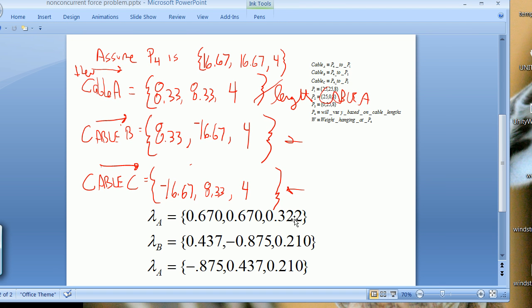And here you see the calculation. If you take 8.33 squared plus 8.33 squared plus 4 squared square root, take that length, divide this by the length, you get these unit vectors. If you notice, they're all positive going up, X, Y, and Z. So this, when you see this depiction, it is 0.670i plus 0.67j plus 0.322k. So that is a unit vector.